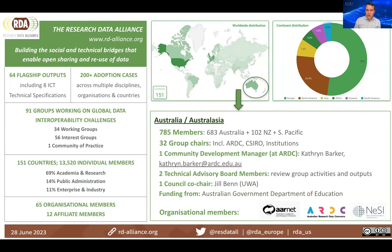Within Australia, we have a vibrant community of participants in Research Data Alliance — 785 members across Australasia, with 683 in Australia. We have 32 group chairs leading working groups and interest groups and driving impact back into Australia and worldwide. We also have a community development manager, two technical advisory board members, and one council co-chair. It's a worldwide phenomenon where we interact with international colleagues, sharing and bringing knowledge and information back into Australia.